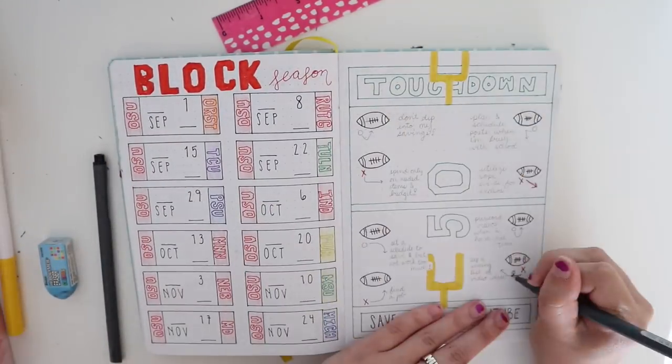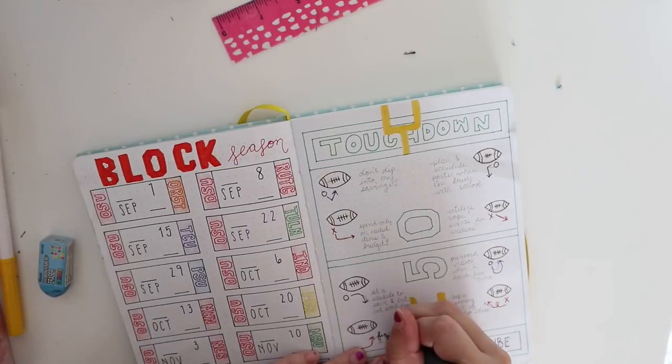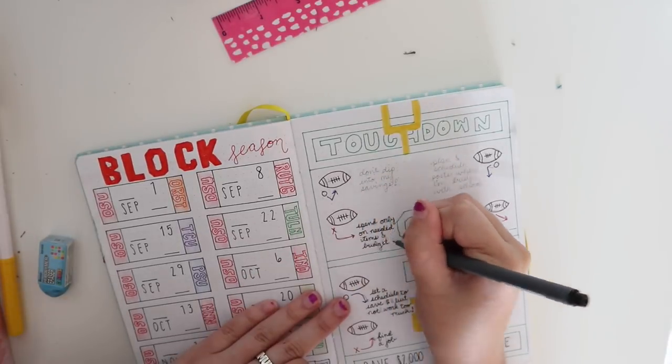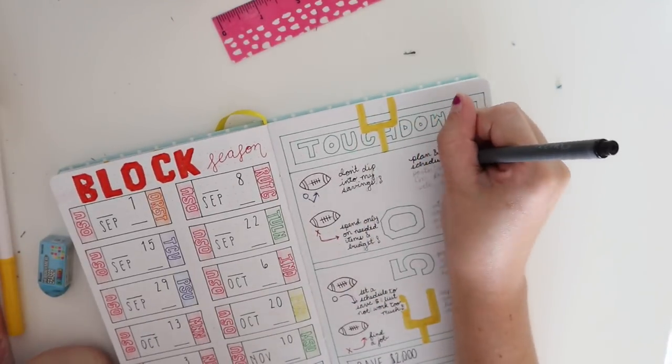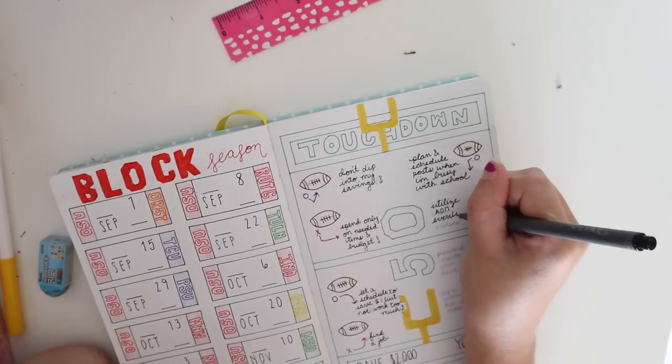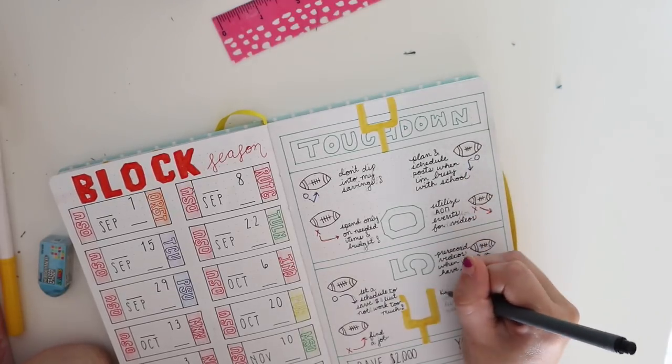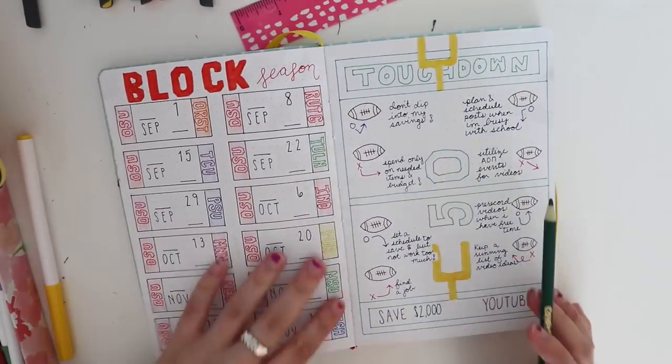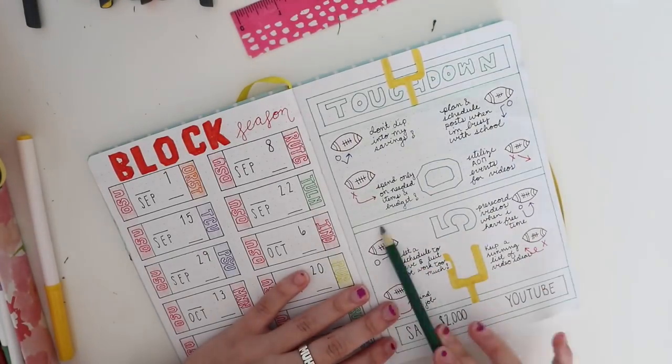So each goal has four little footballs that I get to color in each time I complete one. Once I complete all four that means I have reached my goal and I've reached that touchdown zone. I just thought this was a cute way to keep track of my goals but to still keep with the sports theme this month.